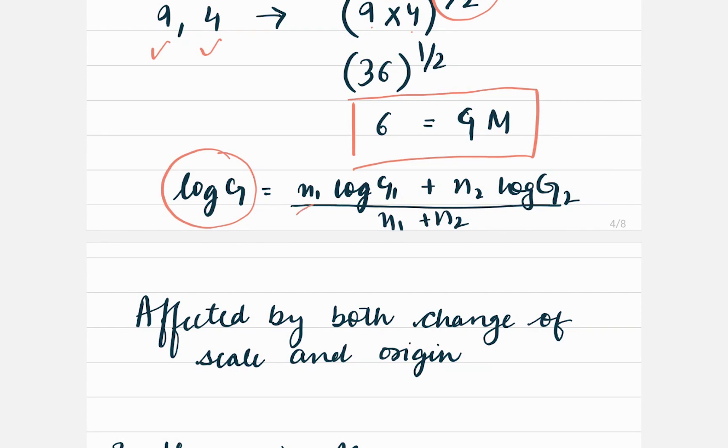So it is n1 times log of g1, where g1 is the geometric mean of the first data set, n2 times log g2 divided by n1 plus n2, which is the total number of observations. Also, geometric mean is affected both by change of scale as well as origin.